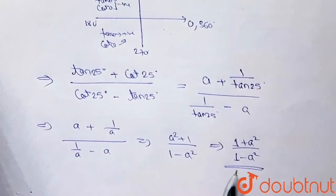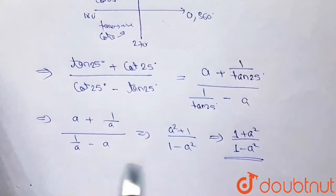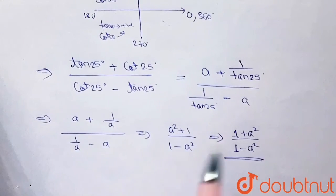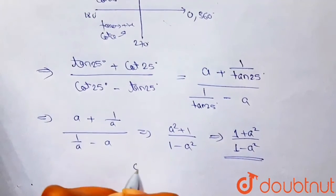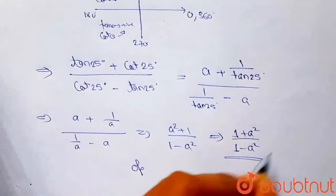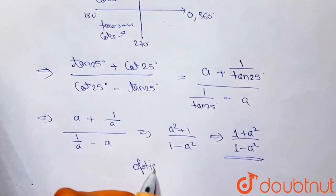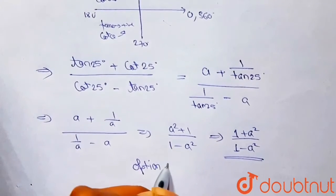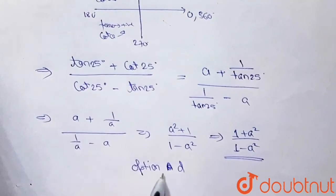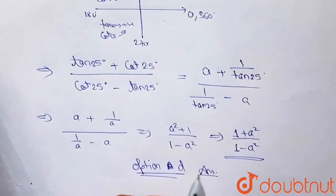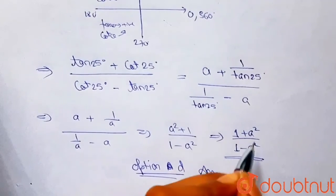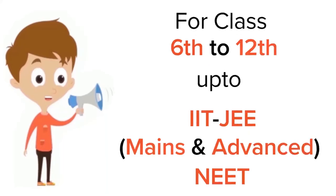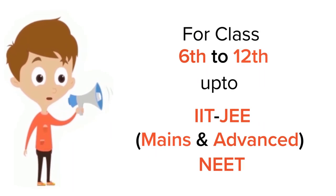So the final answer for the given expression in terms of a is (1 + a²) / (1 - a²). Among the given options, option D gives this same answer. So the answer is option D. I hope this helps, thank you.